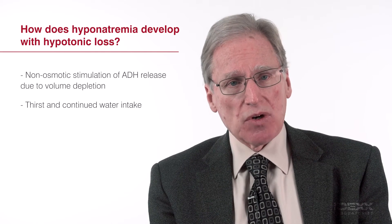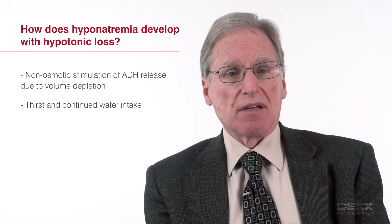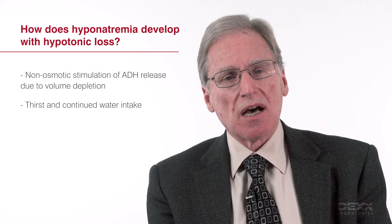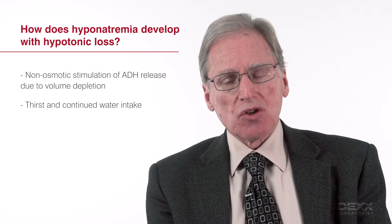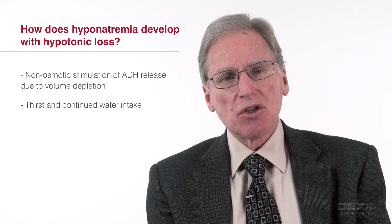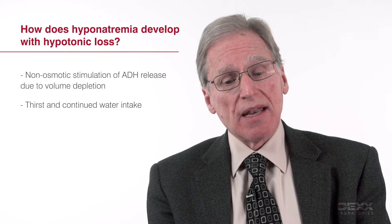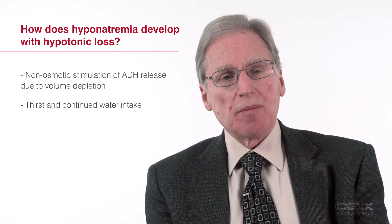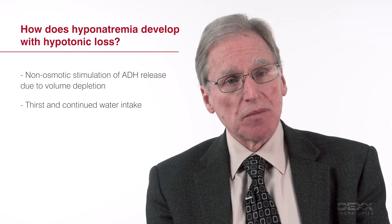You may ask yourself how hyponatremia can develop with hypotonic losses, since you would expect hypernatremia to develop. Hyponatremia can develop with hypotonic losses because of non-osmotic stimulation of antidiuretic hormone release. Severe volume depletion can lead to ADH release from the brain, which can impair water excretion by the kidney. The animal then continues to drink water, but the kidneys can't excrete it very well, so hyponatremia develops. Although it might seem counterintuitive, it's not unusual for hyponatremia to develop in the face of volume depletion.